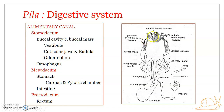Looking at the musculature associated with the buccal cavity, there is a median dorsal muscle, then three pairs of anterior dorsolateral muscles, and two pairs of posterior dorsolateral muscles. There are also three anterior muscles and a pair of long lateral ventral muscles. All these muscles are mainly concerned with the movement of the buccal cavity as well as the movement of the radula.